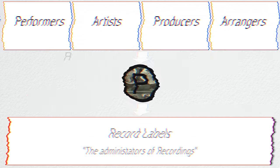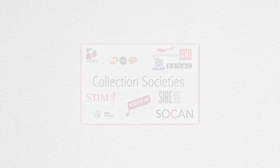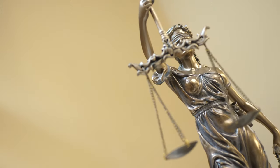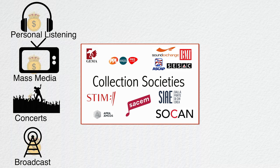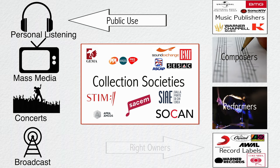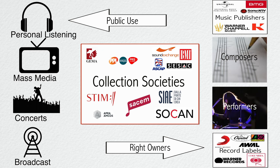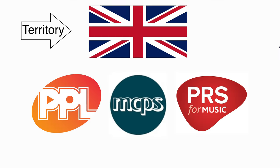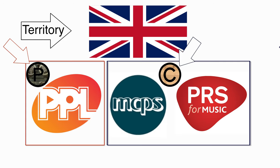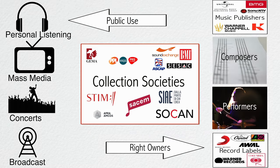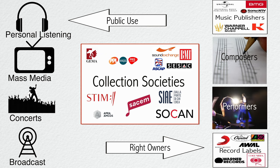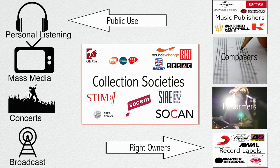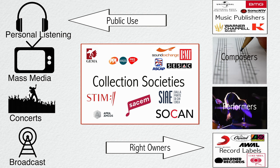What are collection societies? Collection societies are non-profit organizations, usually state-owned. They implement copyright law and act as a hub for collecting royalties for public use and redistributing them to the rights owners. Collection societies are usually territory-specific and separated by the right they administer. These centralized institutions are vital for this system, as without them it would be impossible for copyright holders to track, protect, and monetize every music use or copyright exploitation.